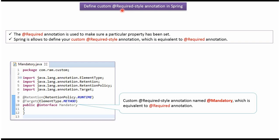In this video tutorial, I will cover how to define a custom at-required style annotation. Using the at-required annotation, we can make sure a particular property of the bean is set before we use the bean in our application. Spring allows us to define our own custom required style annotation, which is equivalent to the at-required annotation.